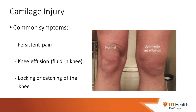In acute cartilage injuries, we may see swelling within the knee. If a chunk of cartilage has broken off and is floating freely, you can see locking or catching — the same mechanism as a meniscal tear, where a free piece of tissue gets caught between the tibia and femur. Persistent pain can also be a feature. This picture illustrates joint effusion — swelling within the knee joint — compared to the normal contralateral knee.